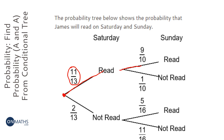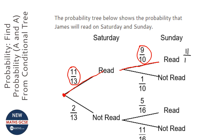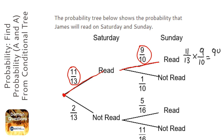And he will read on Sunday, so he'll pass this branch here. The very easy way of doing this is to find the probability of landing here — you take the two fractions and you just times them together. So times the tops: that gives us 99 over 130.